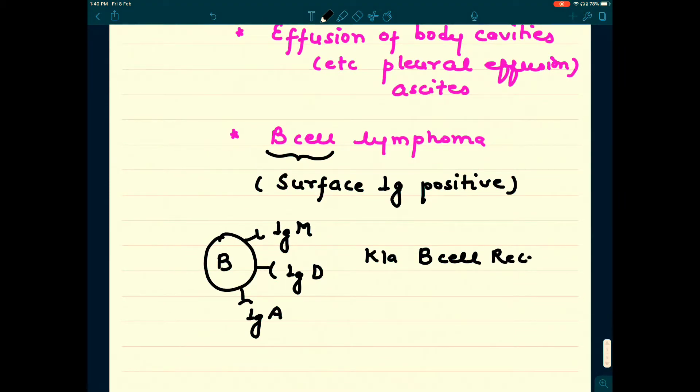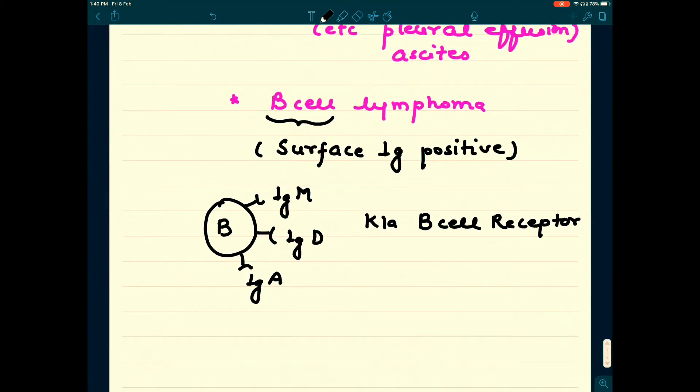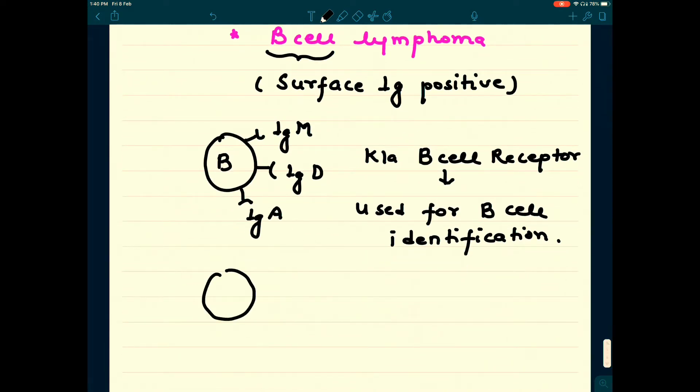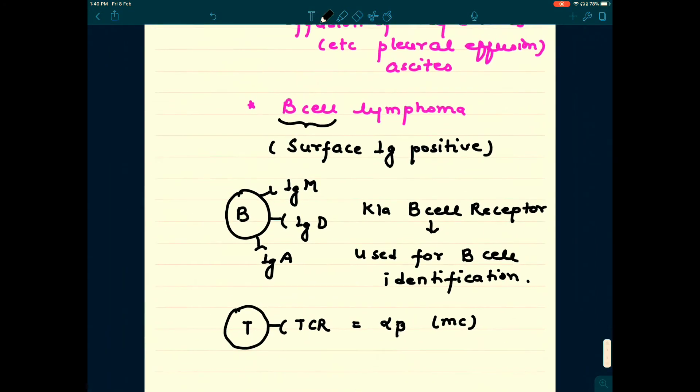That's why we are calling it B cell lymphoma. They are not T cell lymphoma because they are not positive for T cell receptors or TCR. TCR or T cell receptor is alpha-beta protein, the most common type of TCR. Remember, primary effusion lymphoma has B cell receptors which are surface immunoglobulins.